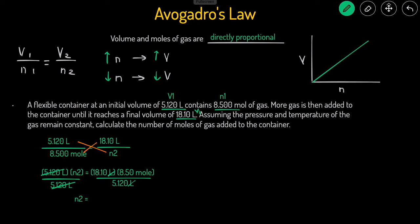So that means N2 will be equal to these two numbers on top multiplied together divided by the 5.12 on the bottom. And that gives us 30.0 moles. That's the final amount of moles.